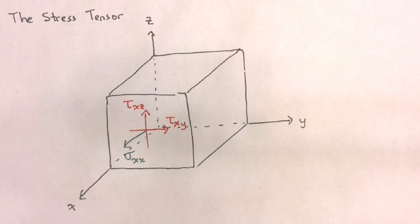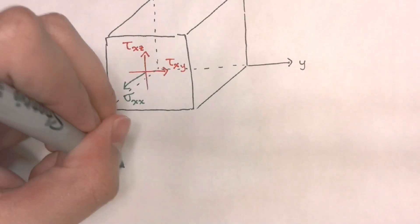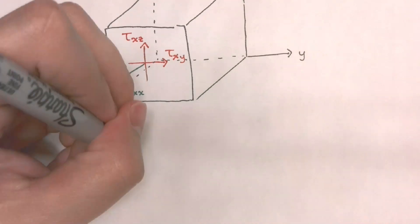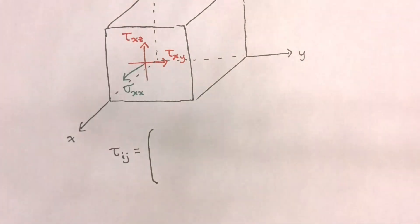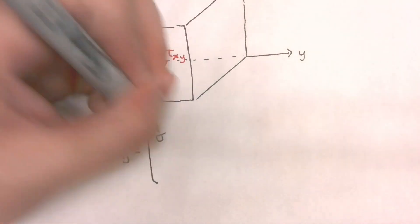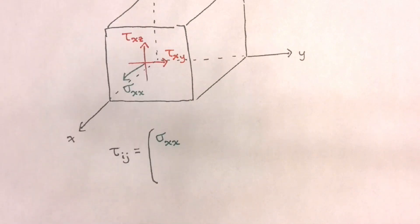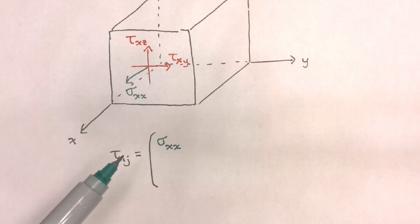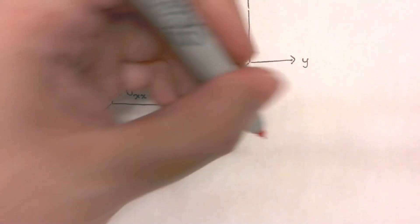We can take all of these components and then define our stress tensor as follows. The stress tensor will be formed by a matrix that contains all of the components of our stress. Starting with the x-face: the normal component is sigma x-x, and we also have a shear component acting in the y-direction and a shear component acting in the z-direction.